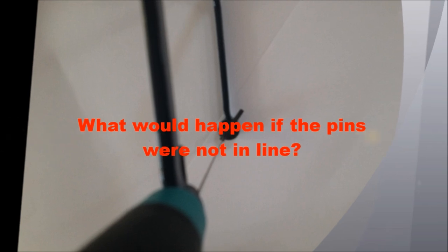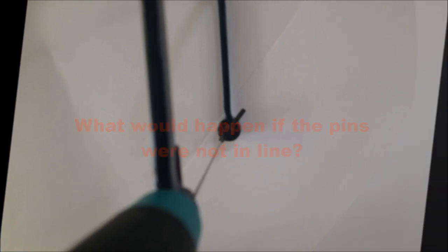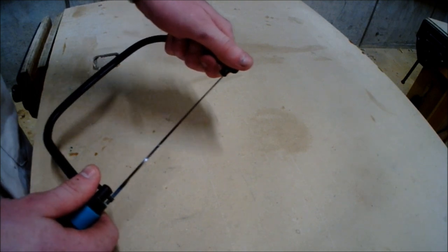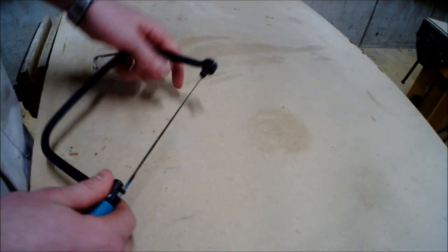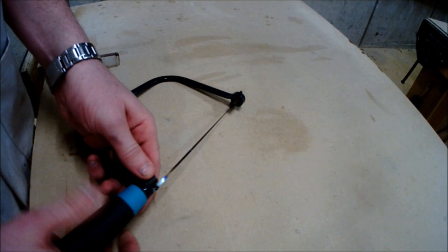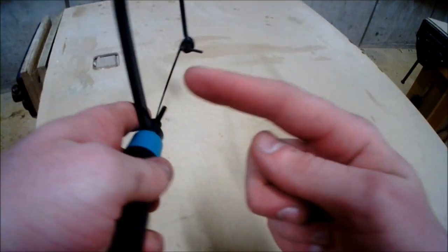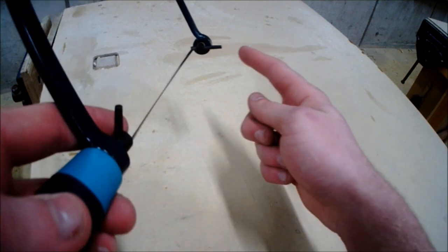What happens if the pins are not in line? If you begin to twist the pins away from each other, the blade begins to warp and twist away from the frame, meaning that it won't be perfectly parallel to the frame to ensure a good, accurate, precise cut.